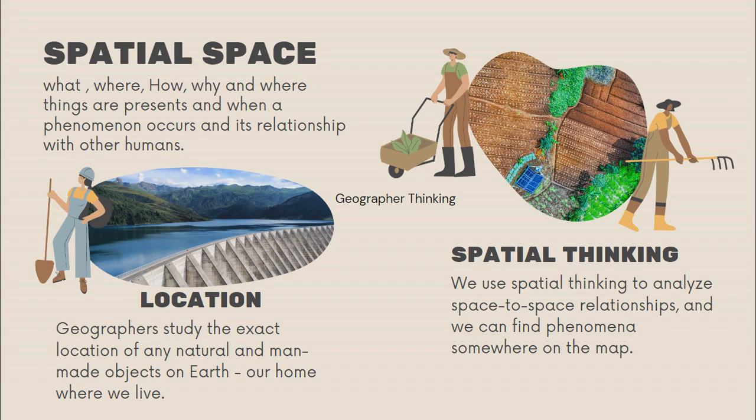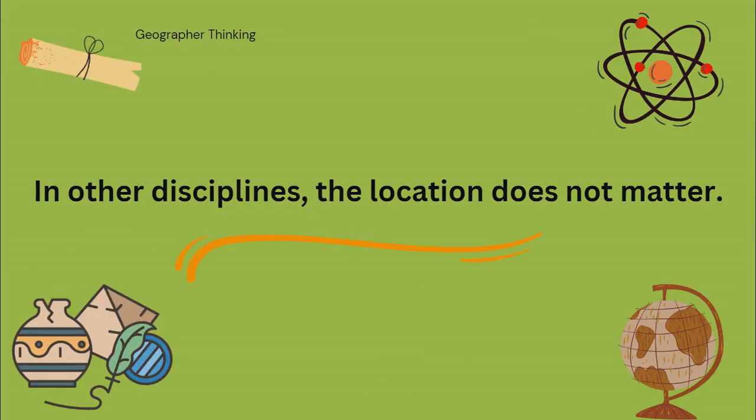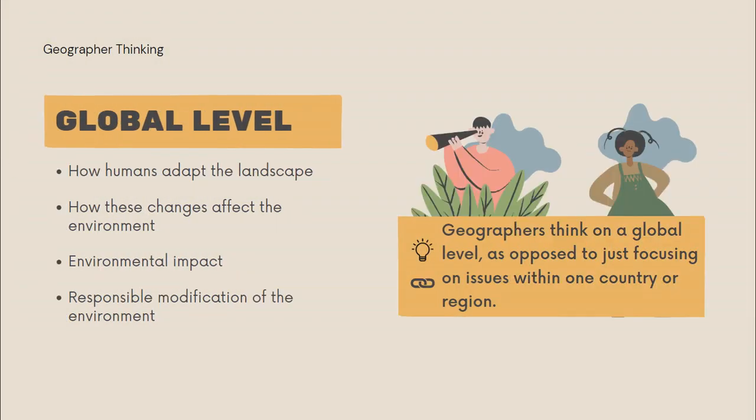Geographers study the exact location of any natural and man-made objects on Earth, our home where we live. In other disciplines, location does not matter. Geographers think on a global level as opposed to just focusing on issues within one country or region — the same as how humans adapt the landscape, how those changes affect environmental impact, and responsible modification of the environment.